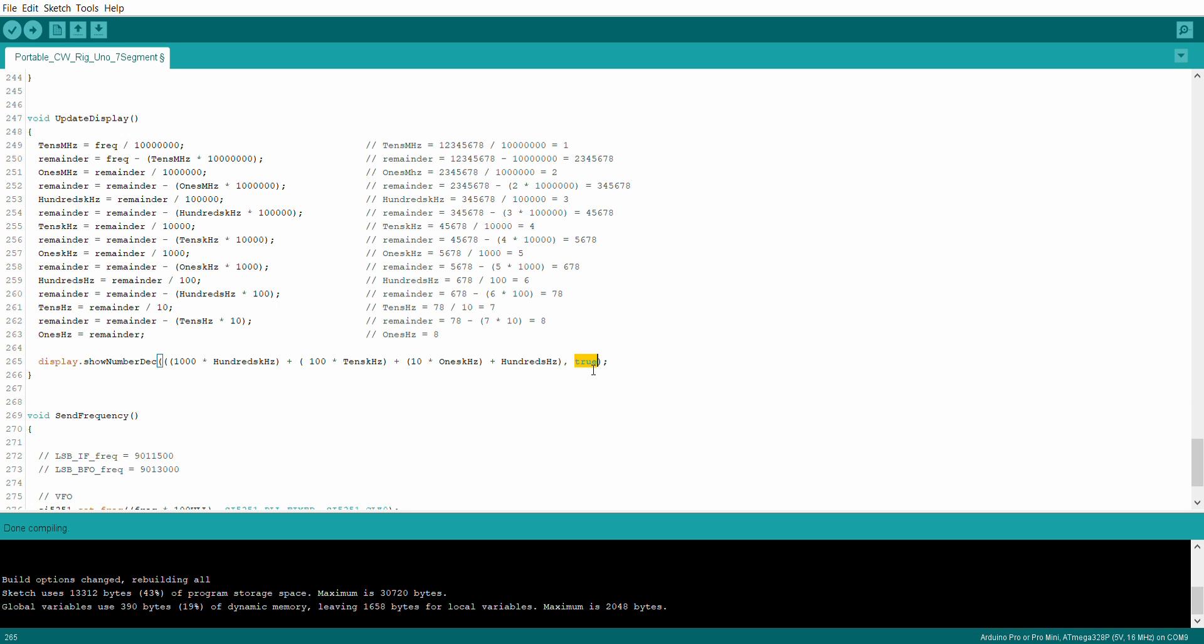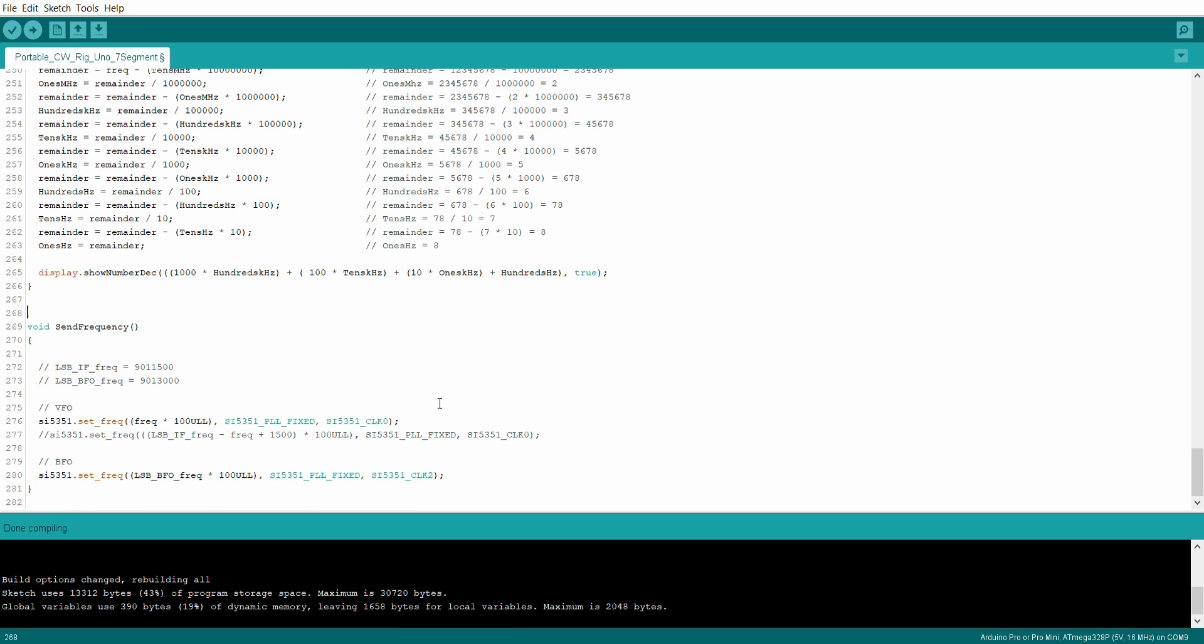And then that comma true there is just that any number that is a zero rather than blanking the display, it actually shows the zero, which looks a lot prettier than just having, for example, if it was down to 50 having the first two displays blank. So it just looks pretty when it's sitting on true. And that's it. It's all that's required to display a number. If I put there, say display show number one with that comma true, then actually on the display I'd display zero zero zero one. So it's very, very easy to run that. And there's certainly quite a bit of information on the Internet on the different formats for displaying. But that's it. Nothing more, nothing less.